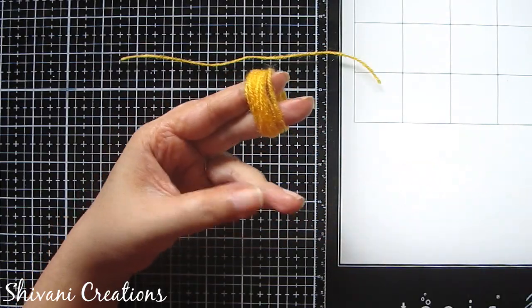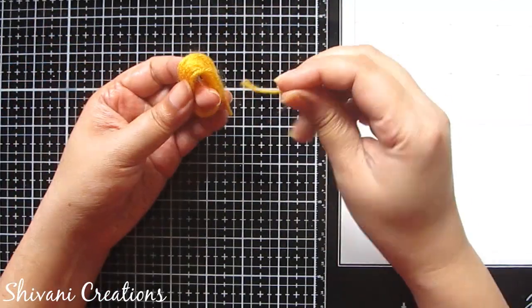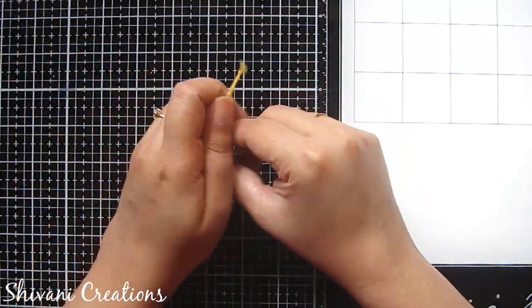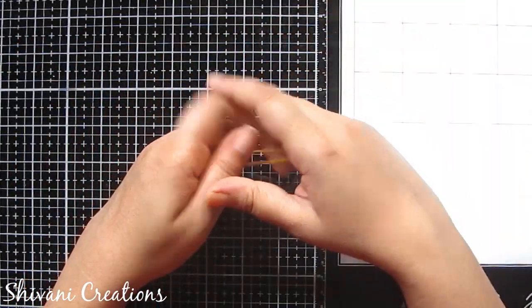Then cut the yarn from bottom and pass this piece of yarn through this and make some knots on top.